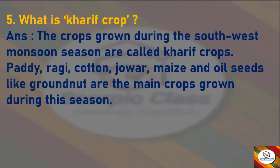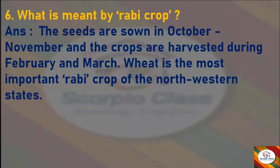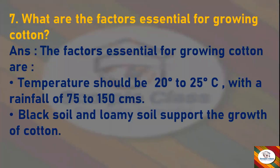Next question: What is Kharif crop? Answer: The crops grown during the southwest monsoon season are called Kharif crops. Paddy, ragi, cotton, jowar, maize, and oil seeds like groundnut are the main crops grown during this season. Next: What is meant by Rabi crop? Answer: The seeds are sown in October to November and the crops are harvested during February and March. Wheat is the most important Rabi crop of the northwestern states.